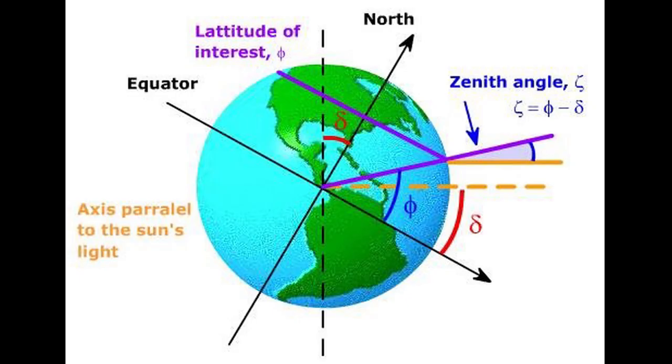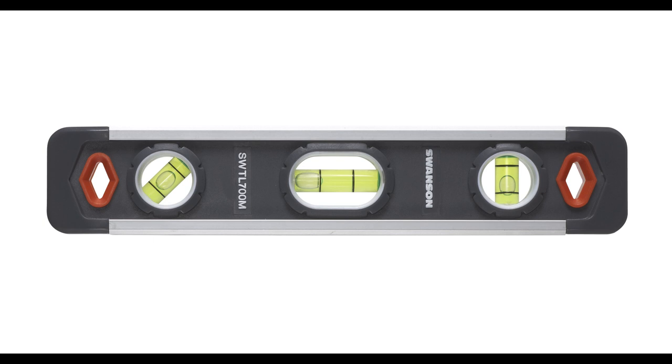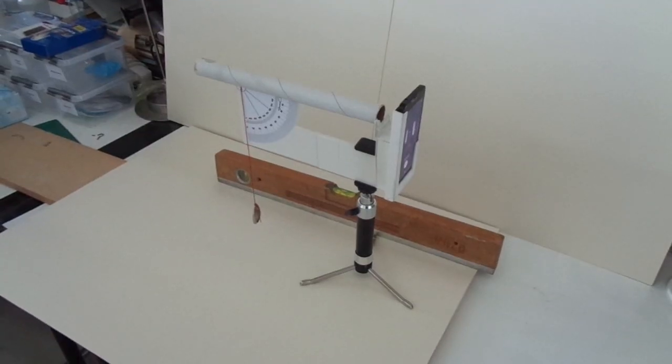A watch, well everybody has a watch, and a zenith angle you can measure directly without establishing a horizontal plane first. The only thing you need is an inclinometer.